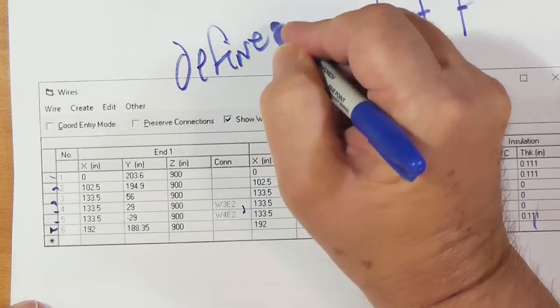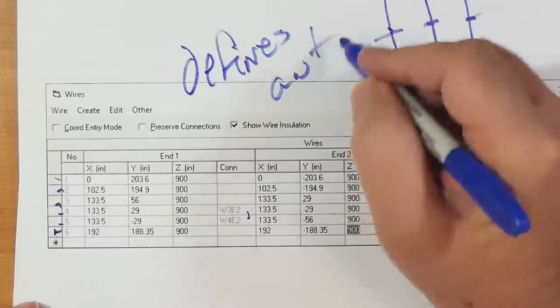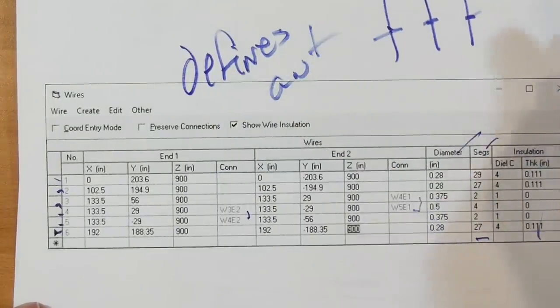And it gives you the N1, N2, and so on. And it's got all this information. It's also got information about connections, and it's got the diameters of the conductors, the segments that you're going to cut it into for modeling, and the insulation and the dielectric coefficient of the insulation and how thick the insulation is. In this case, that's the tube itself, which is plastic or fiberglass. This defines the antenna.